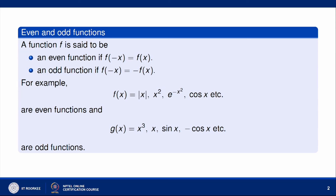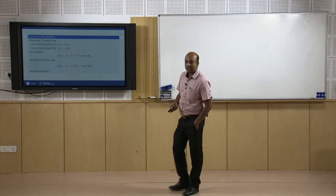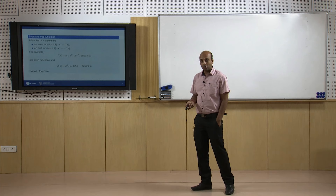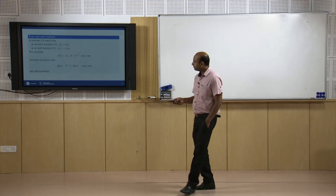However, functions like x³, x·sin(x) are odd functions because replacing x by -x gives f(-x) = -f(x). There are also functions which are neither even nor odd, like x - x², which is neither even nor odd.